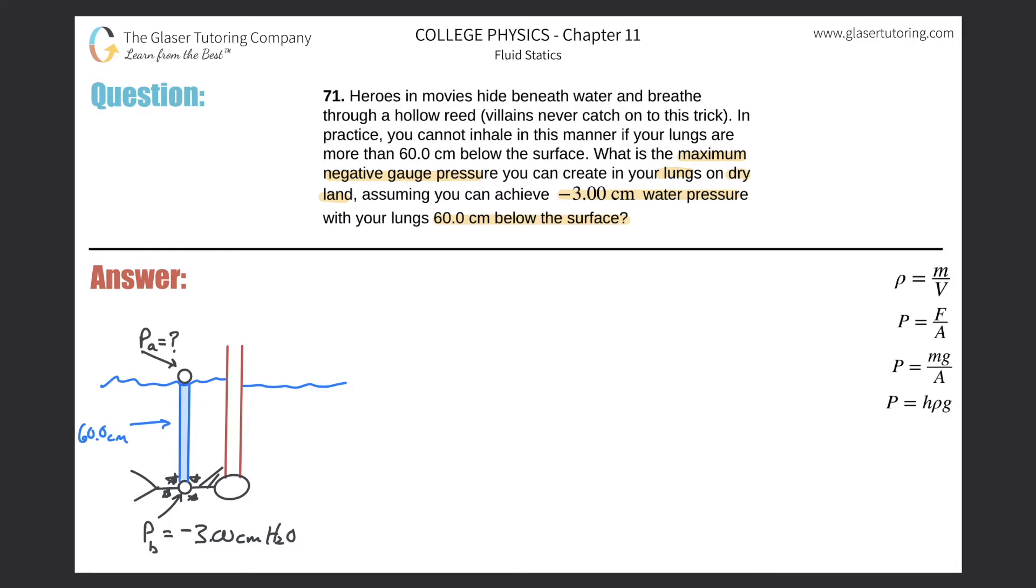Now, if we think about this idea that the pressure here is going to be a result of whatever pressure existed before the superhero was underwater, plus then the pressure due to the water, we can create this simple equation. The pressure beneath the surface is equal to the pressure that the superhero started with on dry air, plus then the pressure due to the water, due to this column of water.